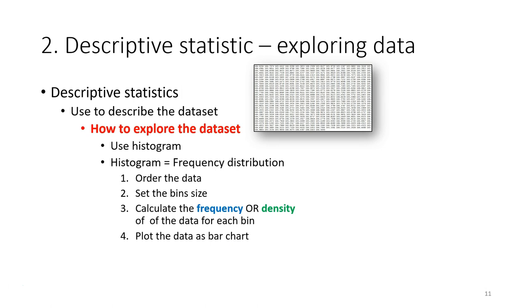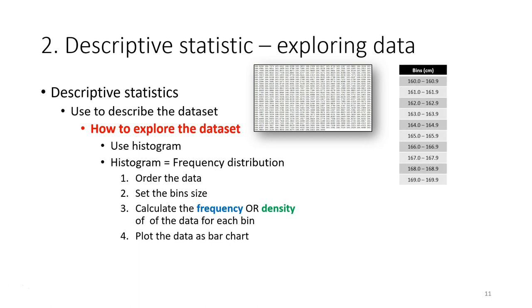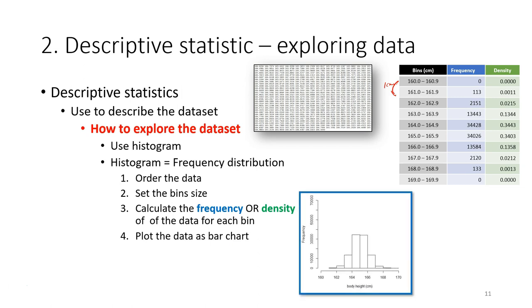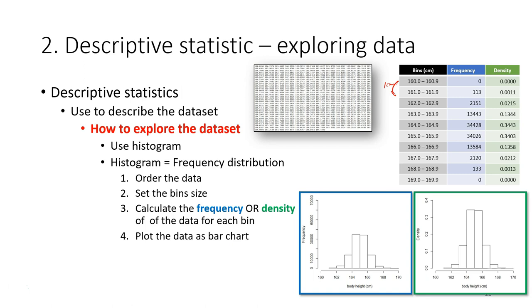Now imagine making another histogram but changing the bin size to something smaller — for example, where the width of each bin is just 1 cm instead of 2 cm. We can recalculate the frequency and density for each of the new bins and plot the chart. The chart will look somewhat different and will provide more detailed information because of the smaller bin size.